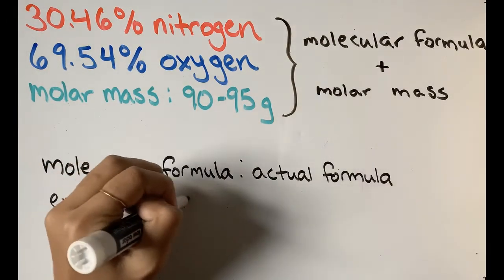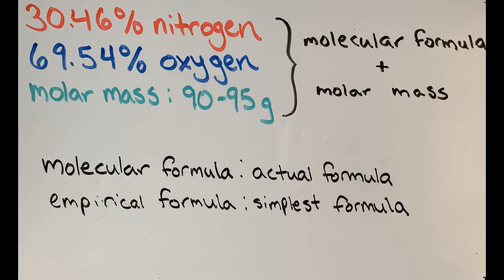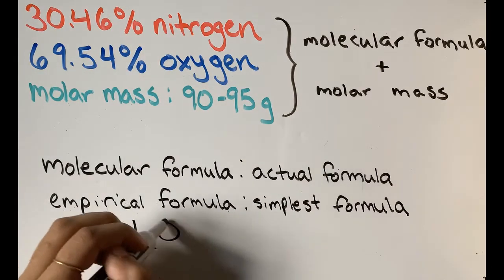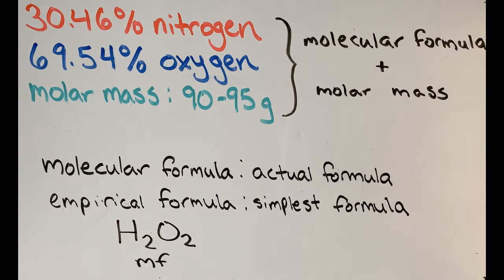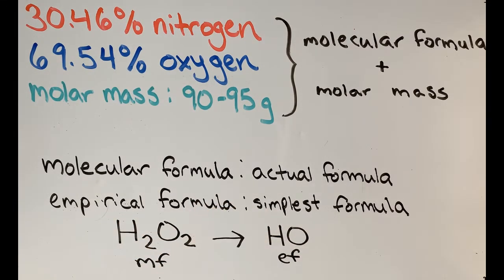For example, H2O2 would be the molecular form of hydrogen peroxide, but it can be simplified to just HO, which is its empirical formula.